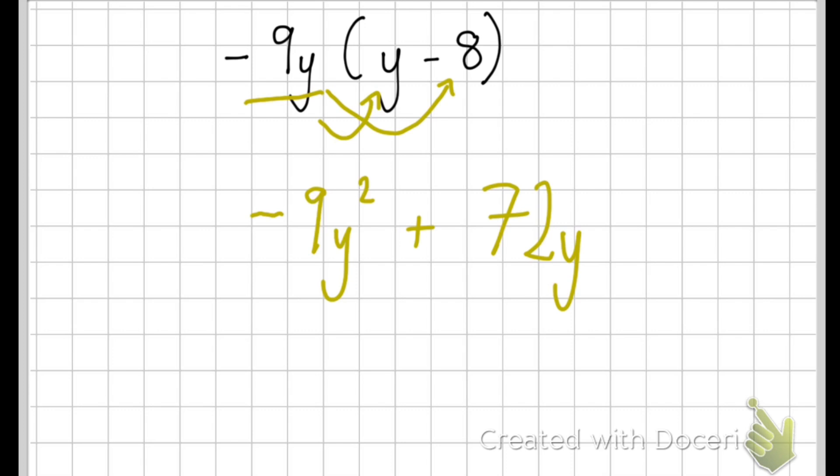And notice that because this is a -8 and because this was a -9 it's changed it into a positive because two negatives multiplied together make a positive. So for this question here we've got -9y² plus 72y.